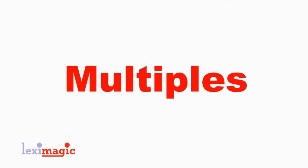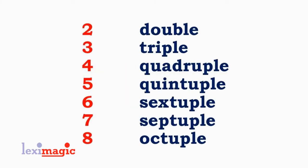We start with words denoting multiples. Double denotes two times the original quantity. Triple denotes three times. Quadruple stands for four times. Quintiple for five times. Sextiple six times. Septiple seven times. And octiple for eight times.